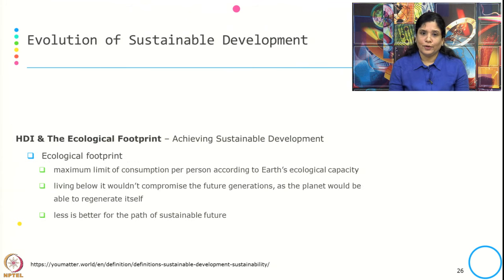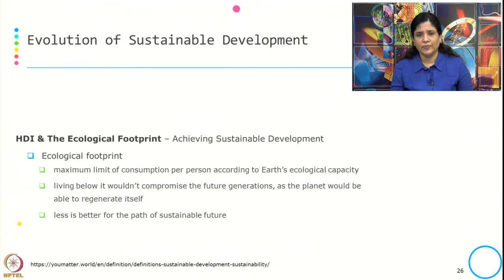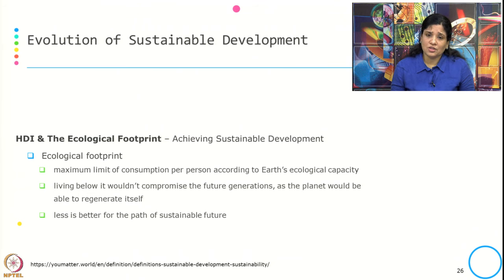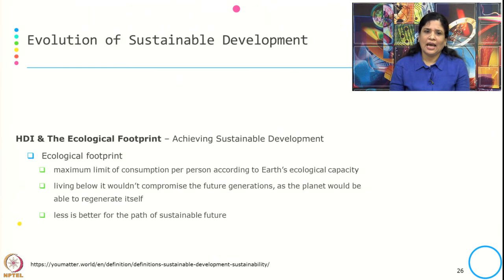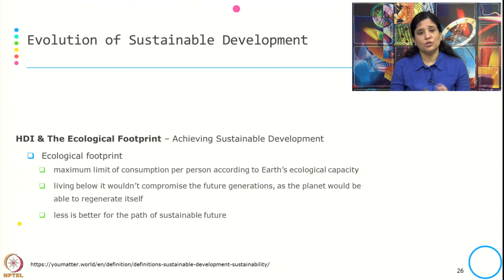Then the ecological footprint was a new concept added, defined as the maximum limit of consumption per person according to the Earth's ecological capacity. If we are living below this limit, it would not compromise future generations because we are not crossing the ecological capacity. The planet is able to regenerate itself, and a smaller ecological footprint is always better for the path of a sustainable future.